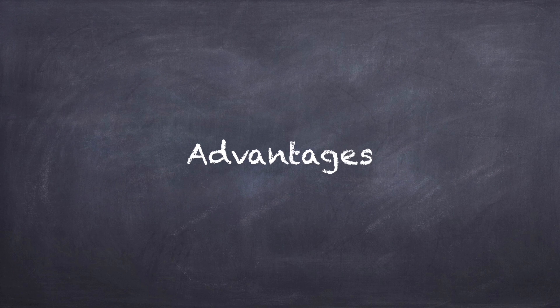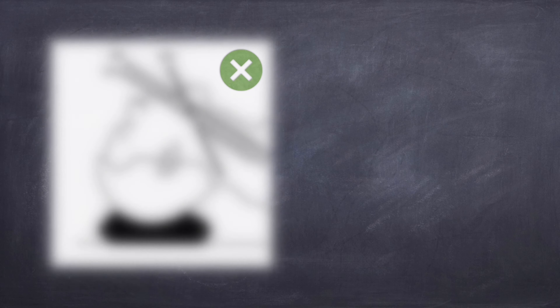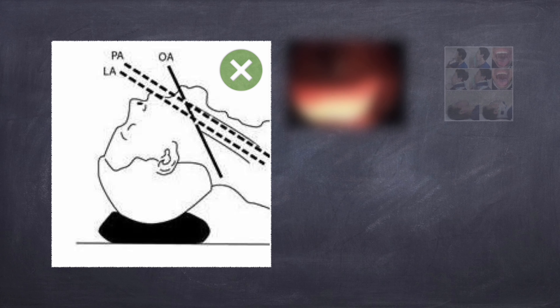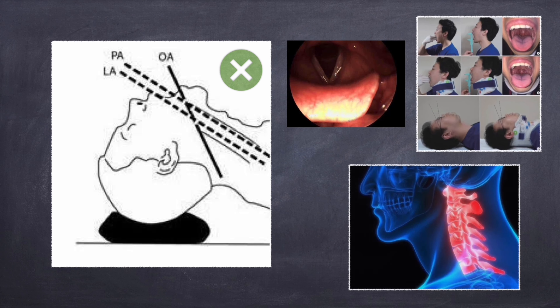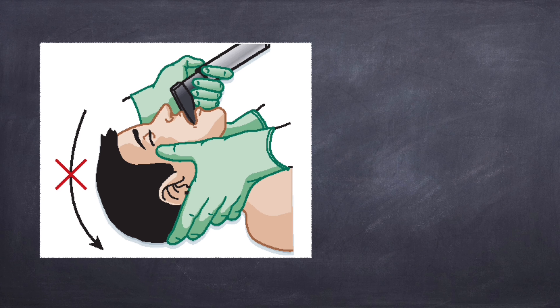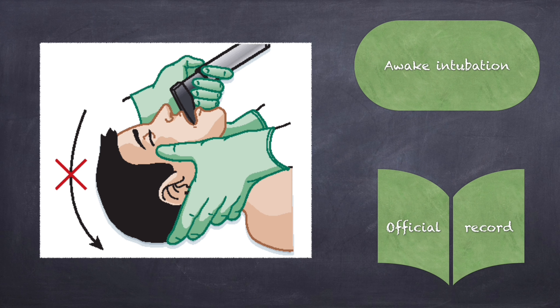Some general advantages of video laryngoscopy include: it is unnecessary to align the laryngeal axis for visualization of the glottis; it gives improved glottic visualization in cases of limited mouth opening and neck mobility; it helps in cases requiring less cervical manipulation; it provides possible awake intubation and airway assessment; and it provides an official visual record.